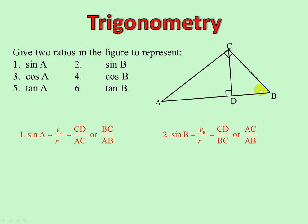In the big triangle, sine of B, in the small triangle CD is the Y, and in the big triangle AC is the Y. In the small BC is the hypotenuse, and in the big AB is the hypotenuse.